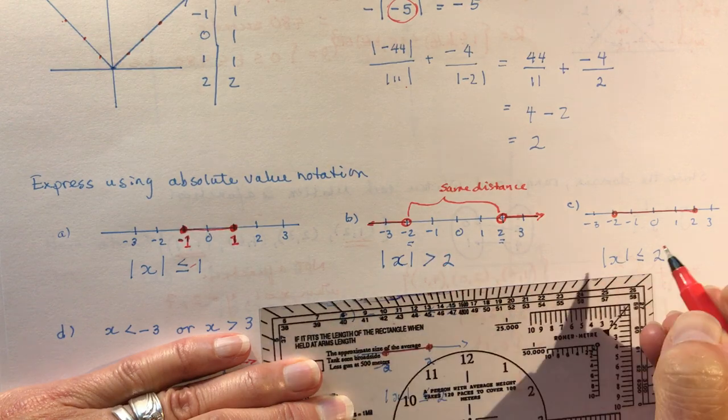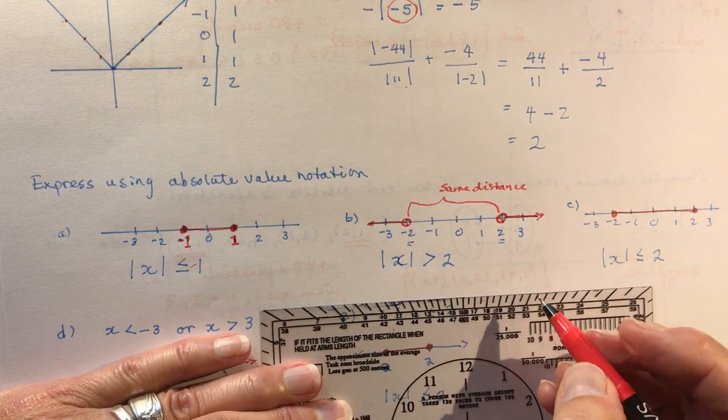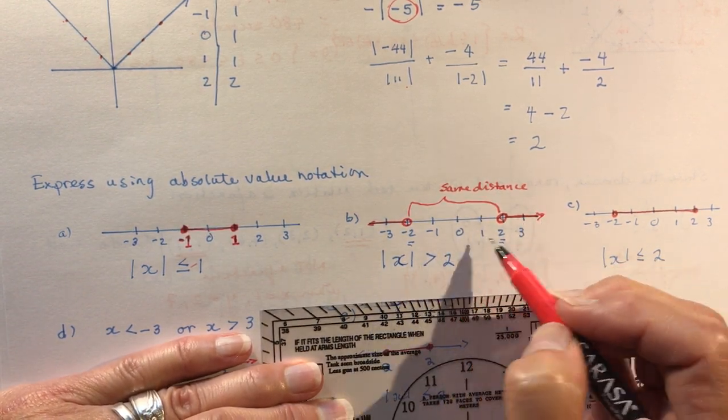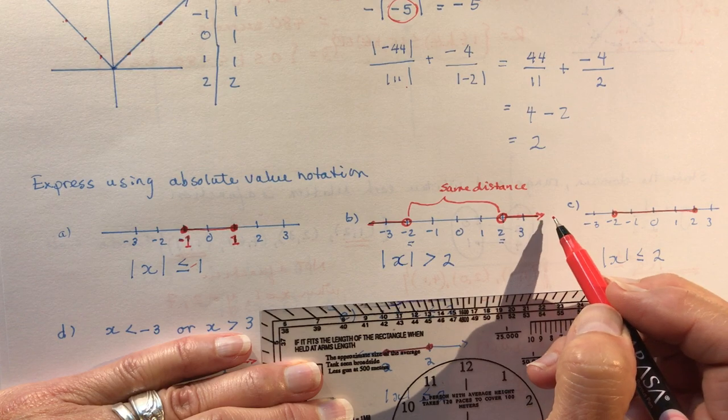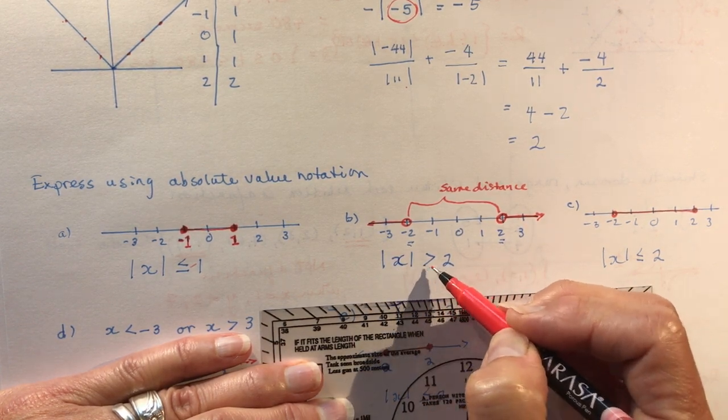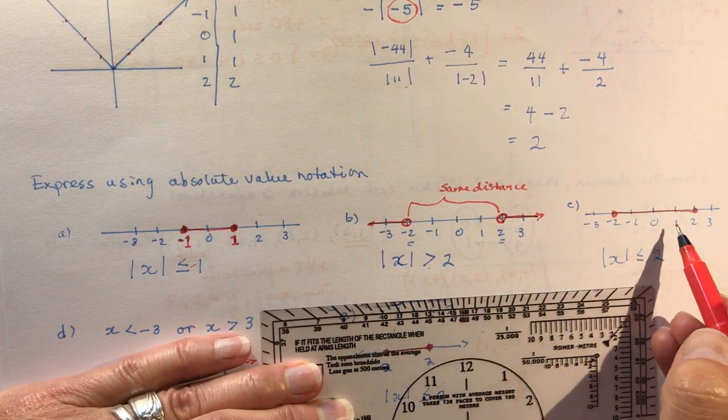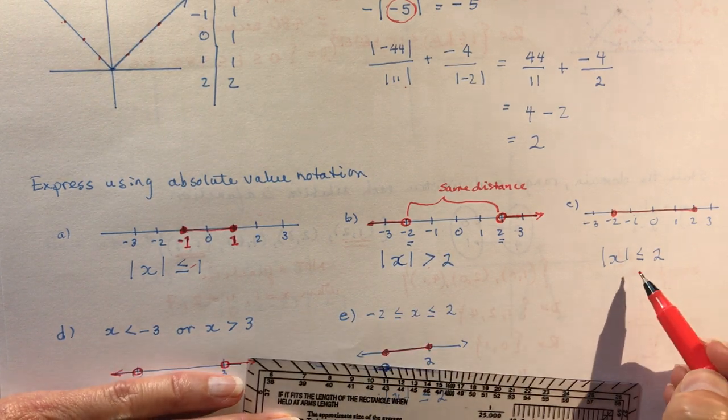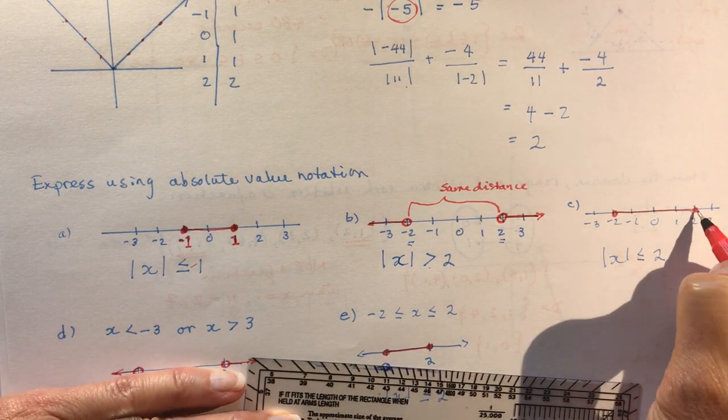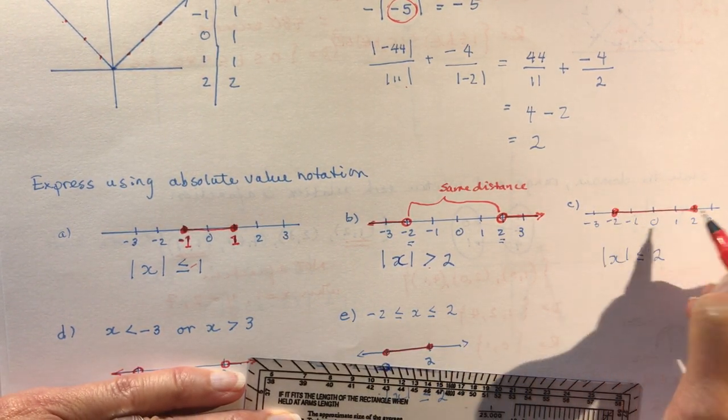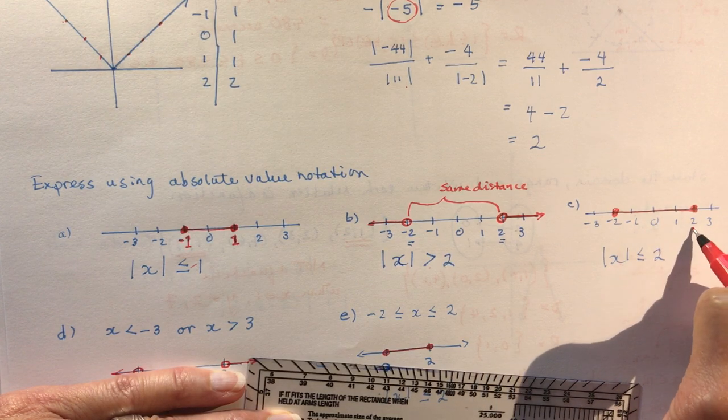Sometimes you'll get ones where the graph has been moved. So here we're going from 2, we're getting bigger. The absolute value of x is greater than 2, and this one is just showing you again like the other one.